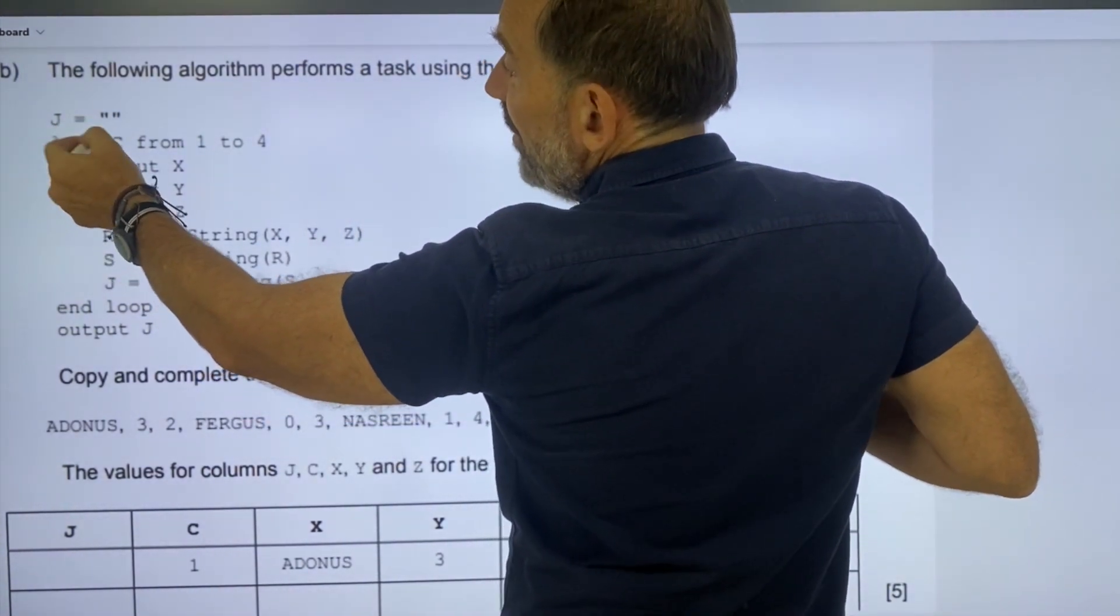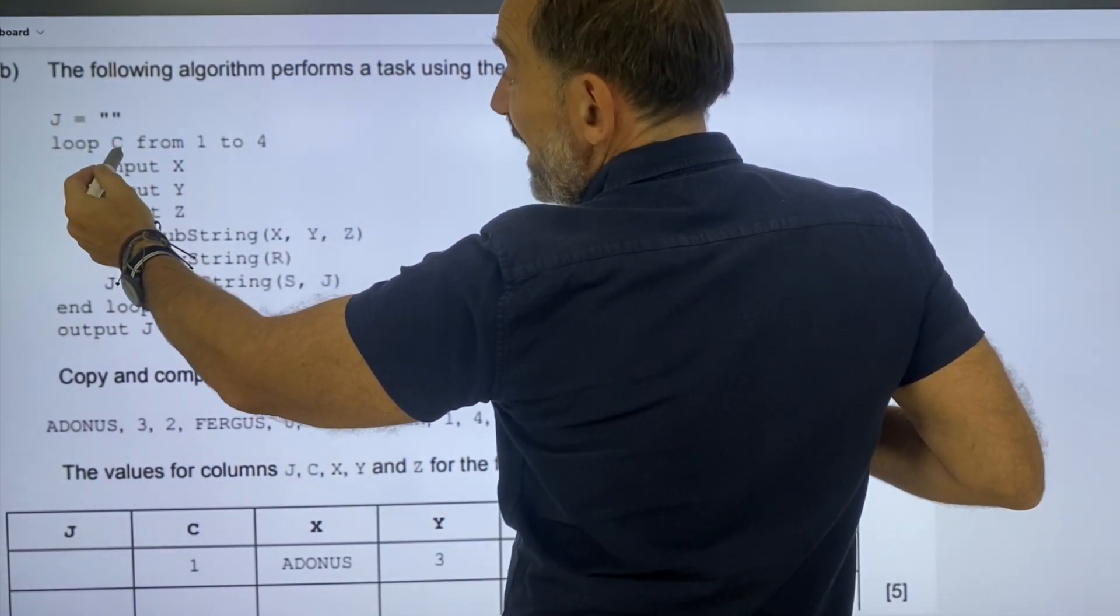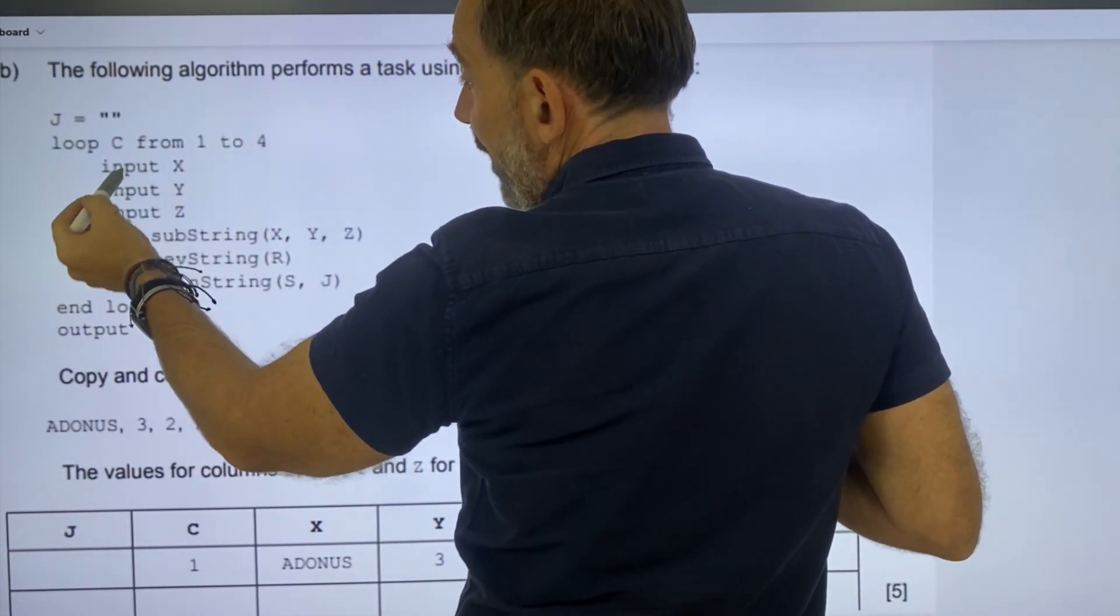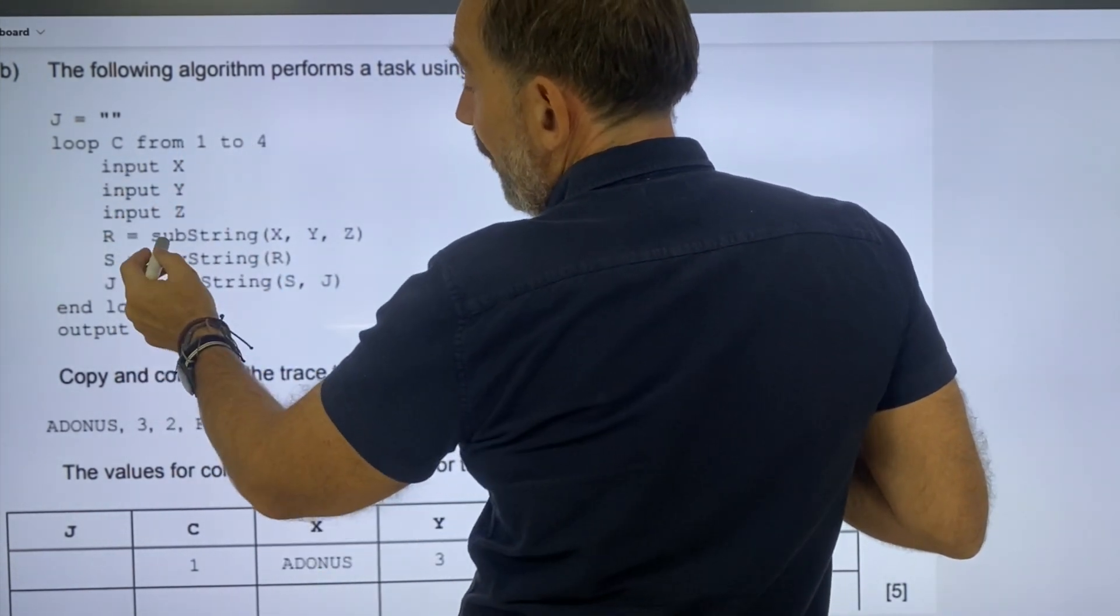We started with j as an empty string. We're going to loop c from 1 to 4, so we're going to loop around 4 times. We're going to input x, input y, input z, and then we've got substring.